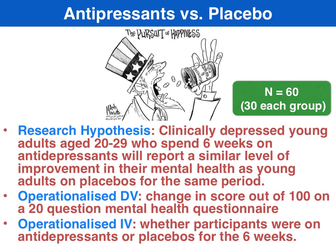There's been a lot of literature that's actually debated the effectiveness or validity of antidepressants. Many of these studies and researchers claim that it's the mere expectation of taking a pill that is mood enhancing, that will actually result in improved well-being, rather than the drug itself. Our operationalised DV is a change in score on a test out of 100 on a 20-question mental health questionnaire. Our operationalised IV is whether or not participants were on actual antidepressants or the fake placebos for that six-week period, using a matched pair design, matching pairs based on their level of well-being prior to the test.